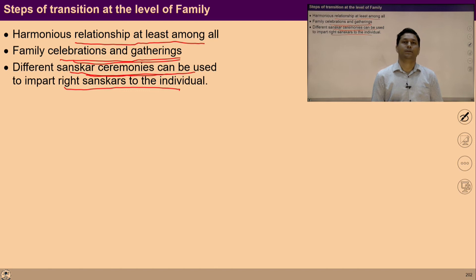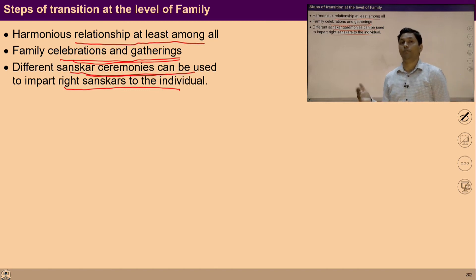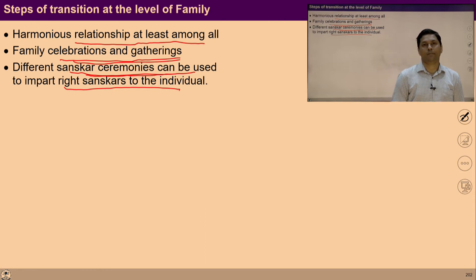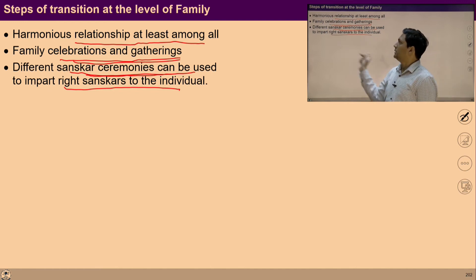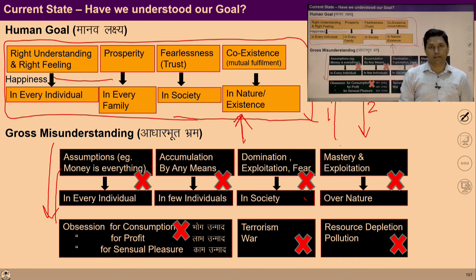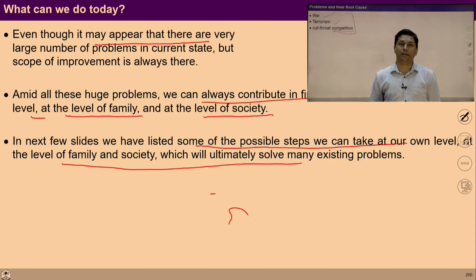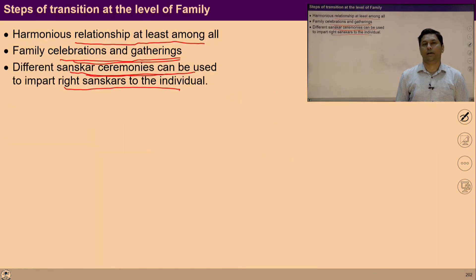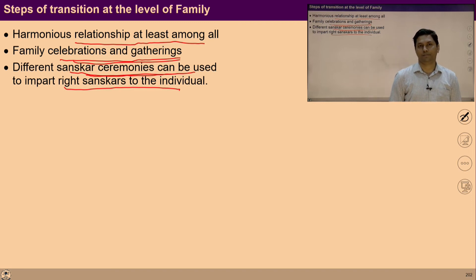If I do self-study, I find out the innate potential and establish a feeling of relationship in me. At least I can start ensuring justice in relationships with people around me, ensure right utilization of things, ensure feeling of prosperity in me, start the right utilization of physical resources available in our house, and work with the feeling of excellence with friends and family members. If everyone takes steps in this direction, cumulatively there is a possibility to move towards the desired state.